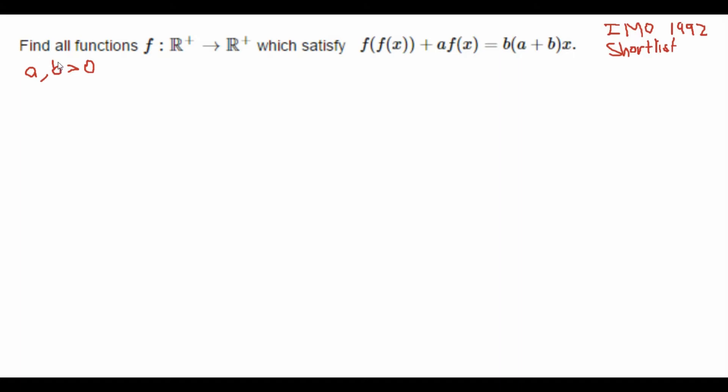Find all functions f from positive reals to positive reals which satisfy f(f(x)) + a*f(x) = b(a+b)x. They forgot a condition: we have a and b are both greater than zero.